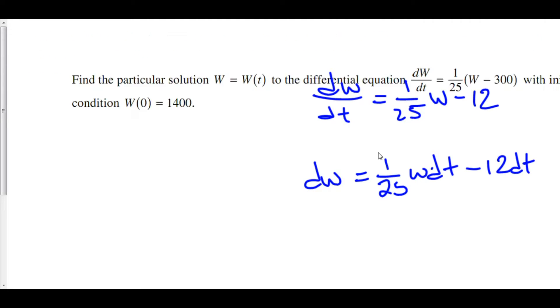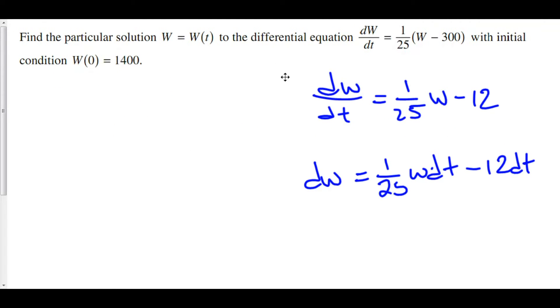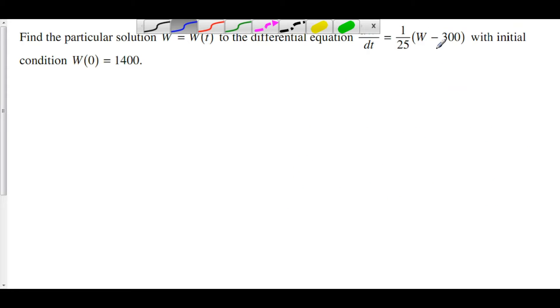So we'll divide both sides by w minus 300, and we get 1/(w - 300)dw equals 1/25 dt. You want to have your constant on the right hand side with your independent variable. Keep in mind that you always want to do that.